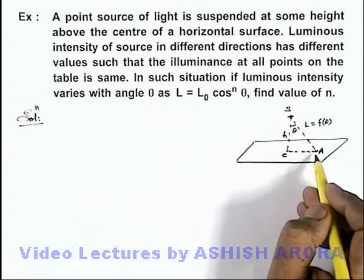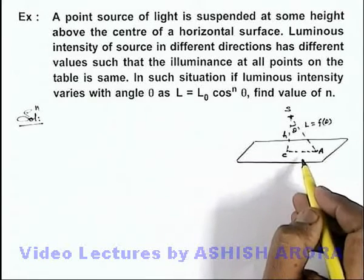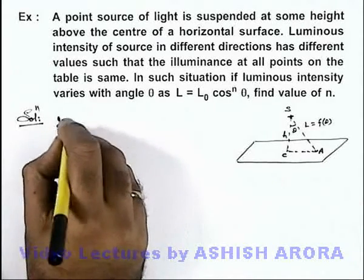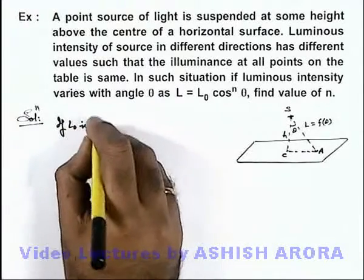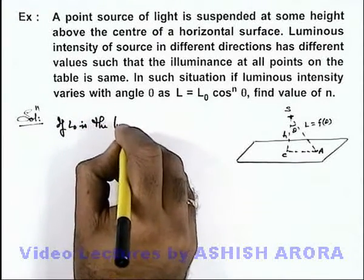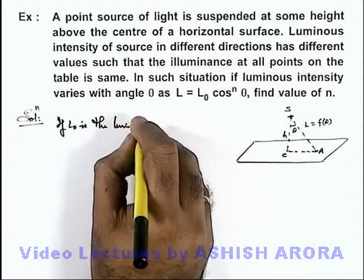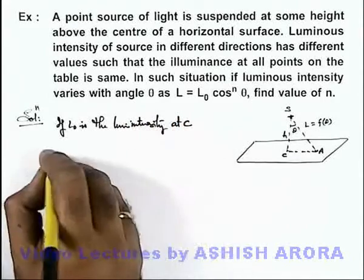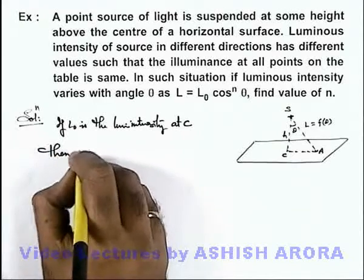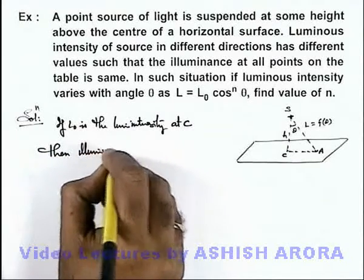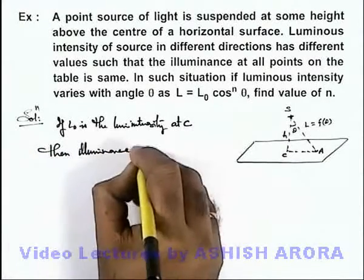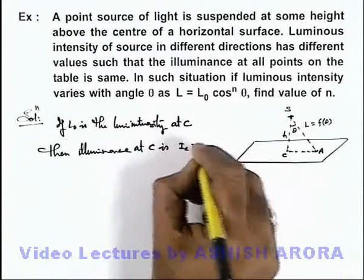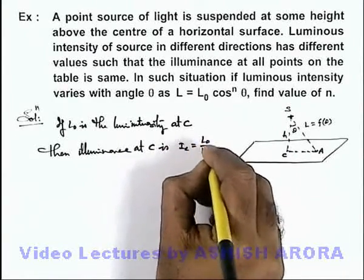Now in this situation we can write: if L0 is the luminous intensity at C, then illuminance at C is L0 by h square. In this situation, if at point A we can see if L is luminous intensity towards the direction of point A, this implies we can use...